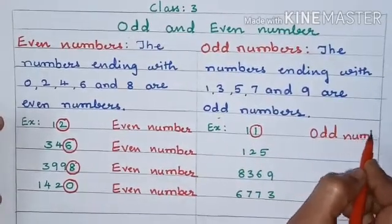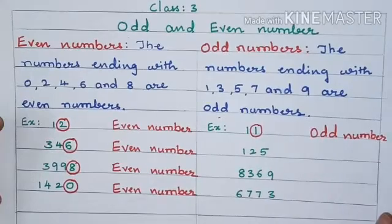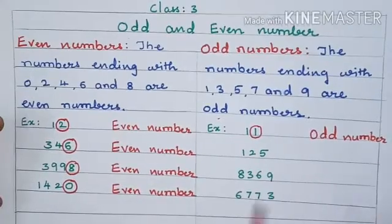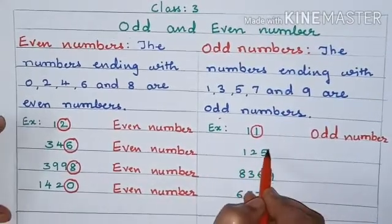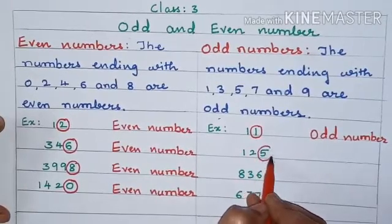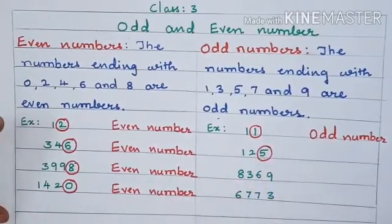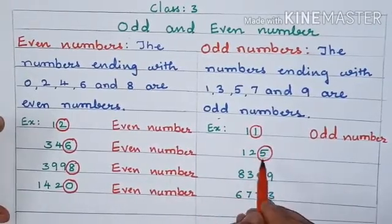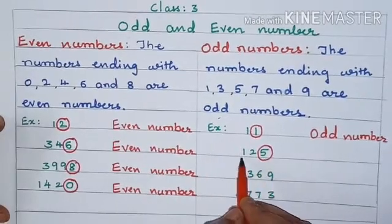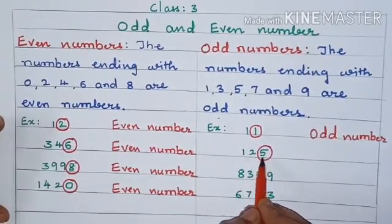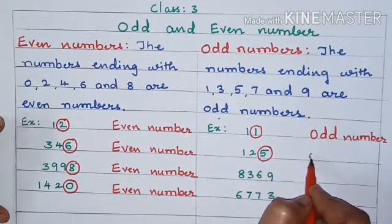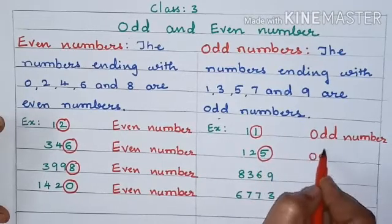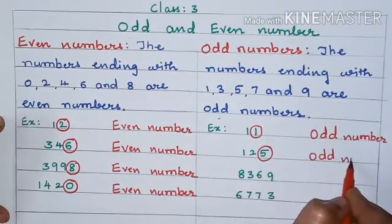The next one: 125. So we will find out the last digit. Last digit is 5. So 5 is the ending number. So 125 is also an odd number because 5 is an odd number.